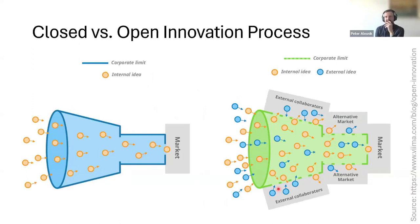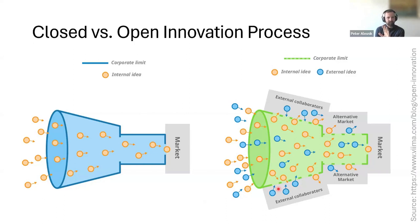Before going further, let me talk briefly about closed and open innovation processes. In a closed innovation process, you have a syndrome summarized as 'not invented here' — if it's not invented in our place and we don't control everything, it's a no-go. If you open up the innovation process, external knowledge can flow in and solutions can go outside, enabling broader application.